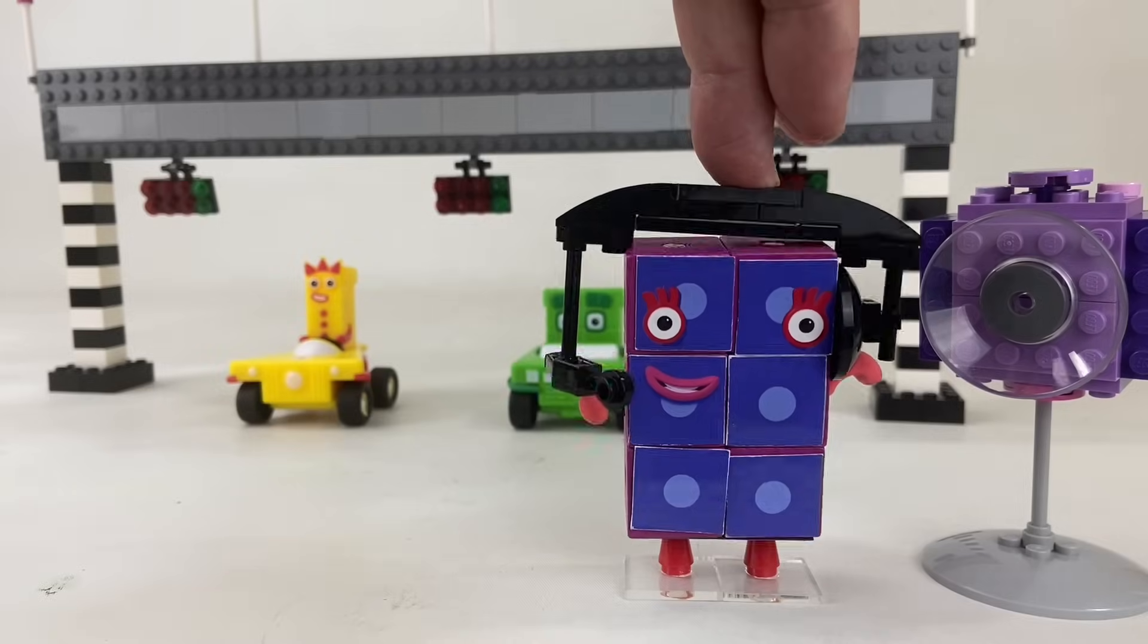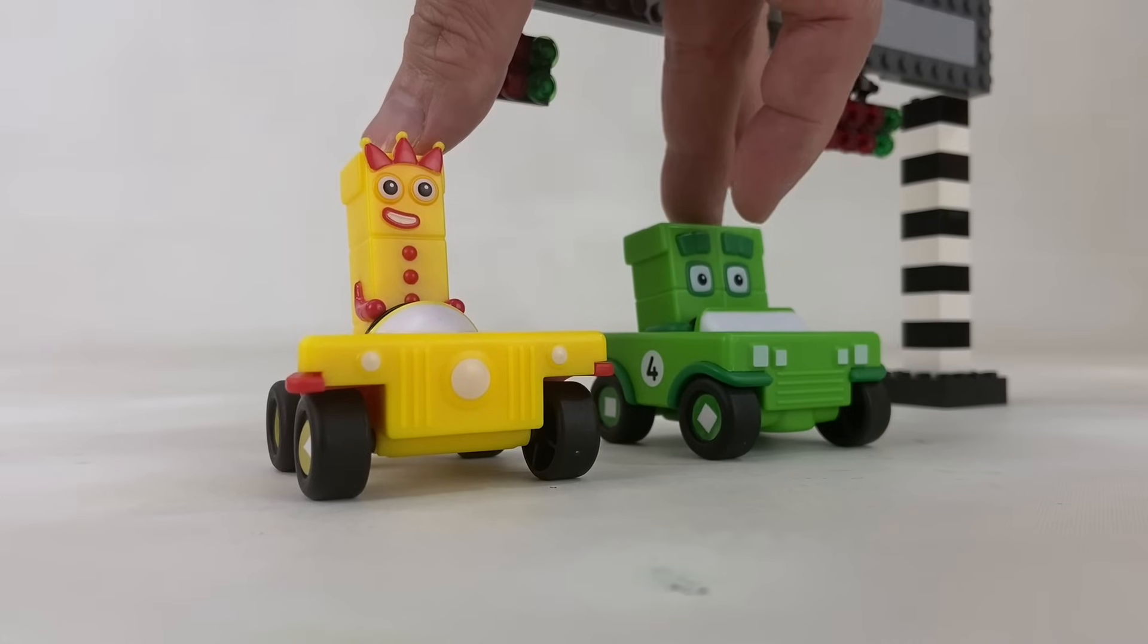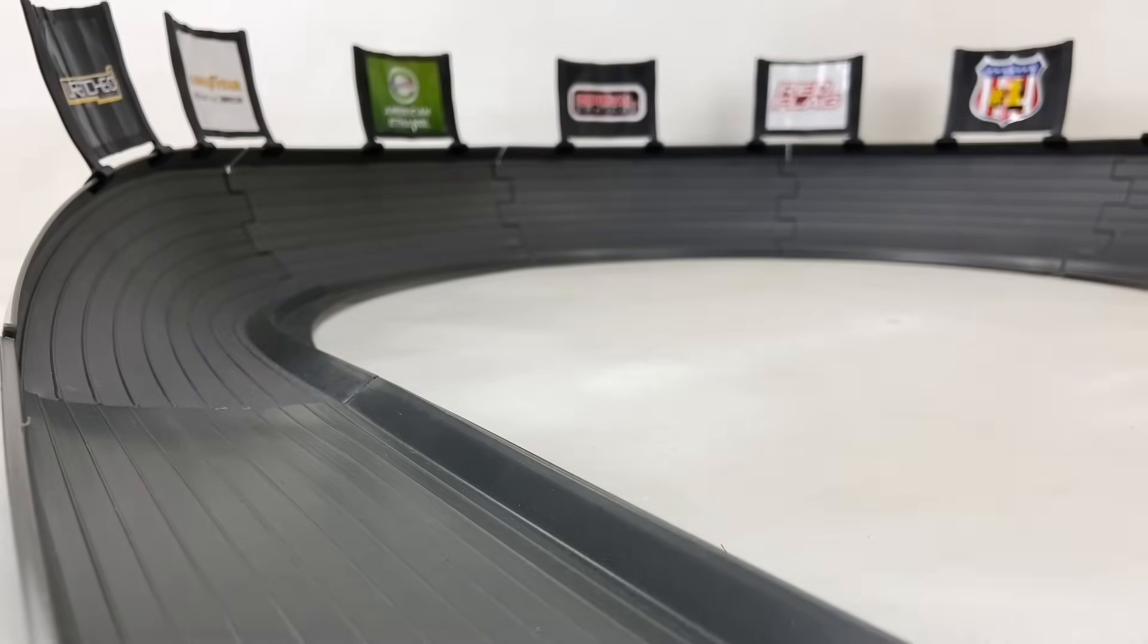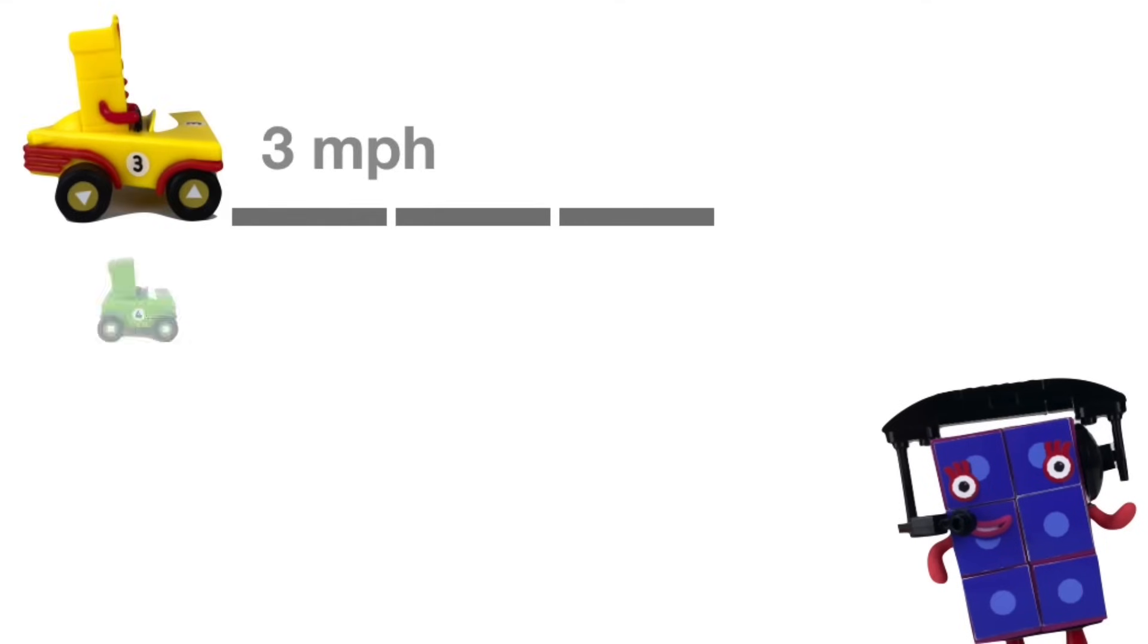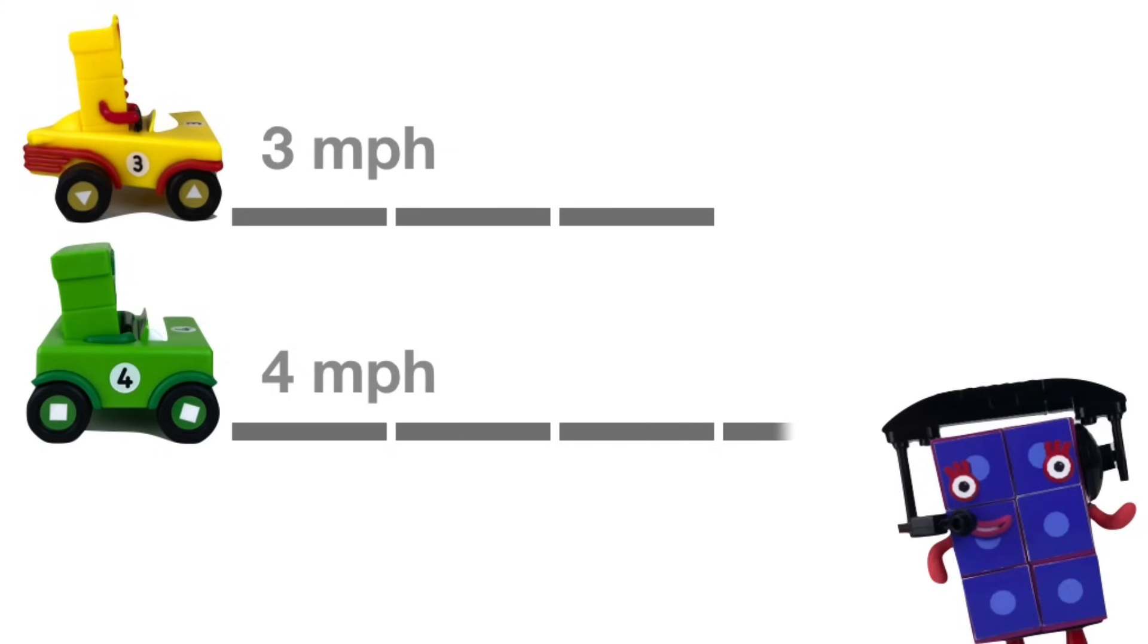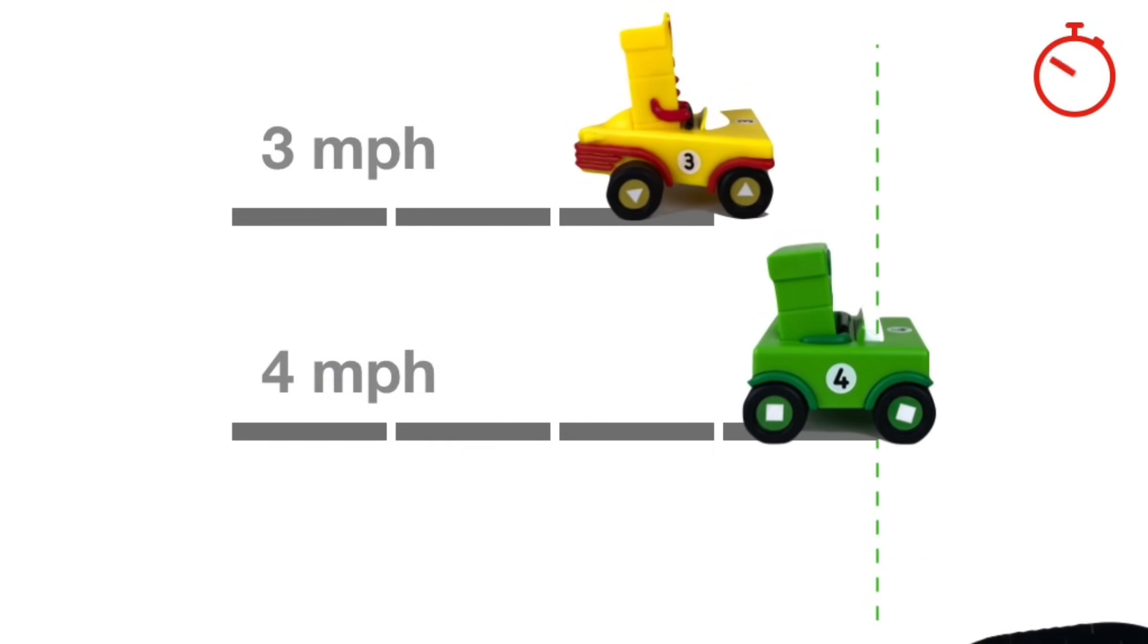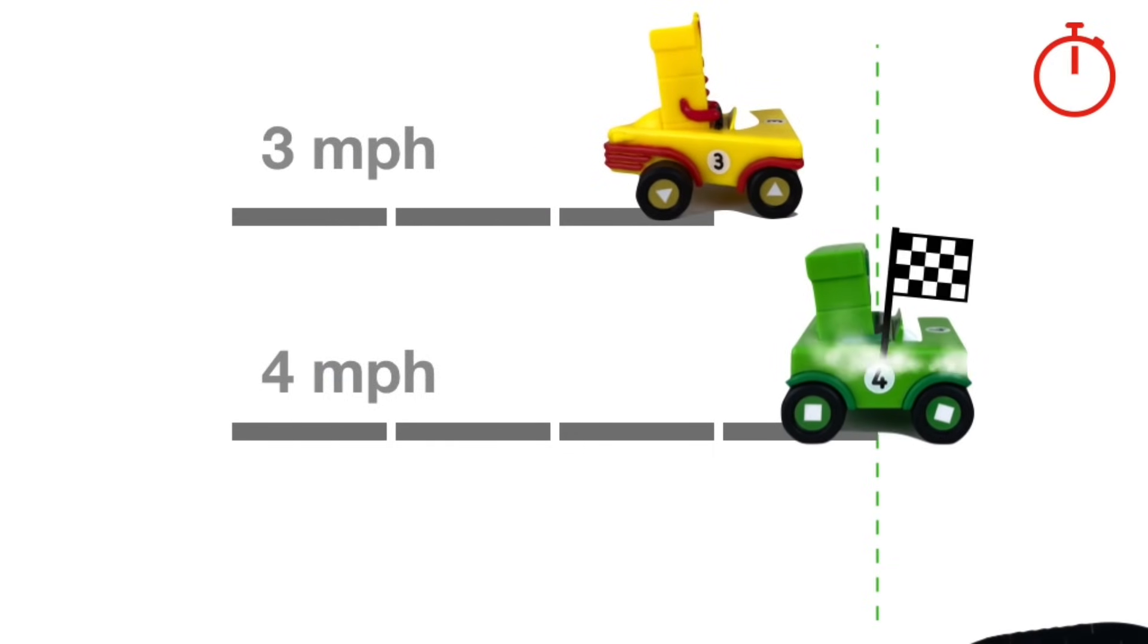For our next round we have three going against four in a four mile race. And off our racers go. Four goes to the turn first and there goes three as well. In this race, three is going at three miles per hour while four is traveling at four miles per hour. The finish line is four miles away. After an hour, three would have completed three miles only while four would have traveled four miles which is already the finish line, so four wins this race. Three would still be one mile behind.